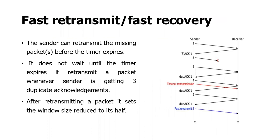Fast Retransmit or Fast Recovery is one of the TCP congestion control mechanisms. Here the sender will be sending one packet to the receiver. Before the timer expires, the receiver has to send the acknowledgement to the sender. The sender can retransmit the missing packet before the timer expires — it does not wait until the timer expires.